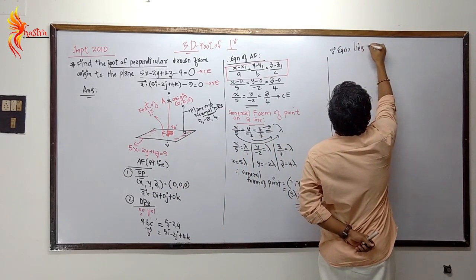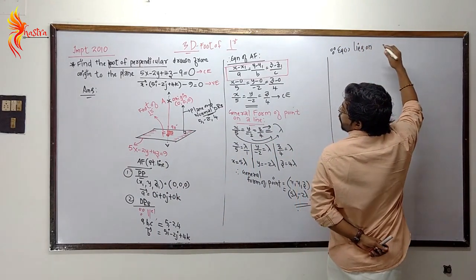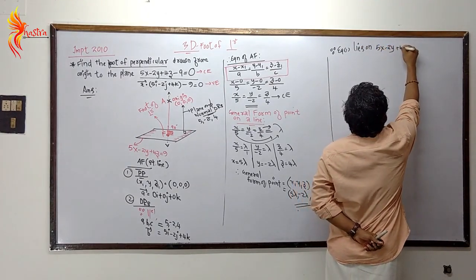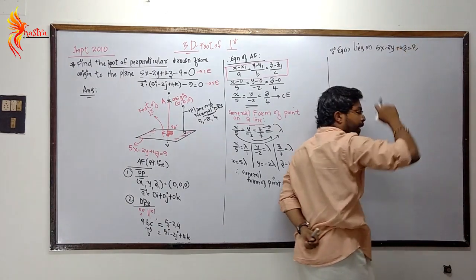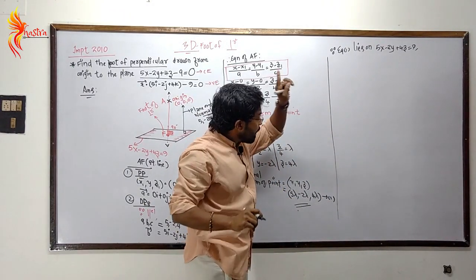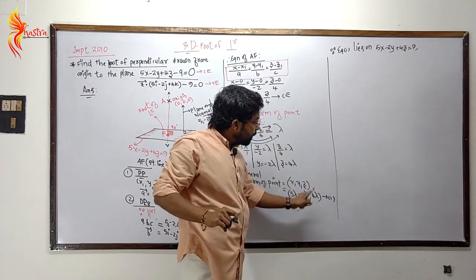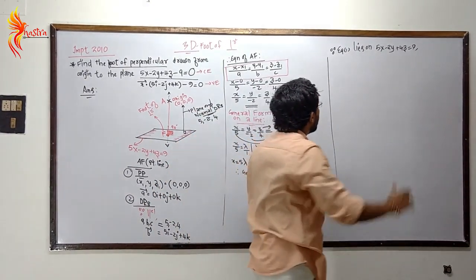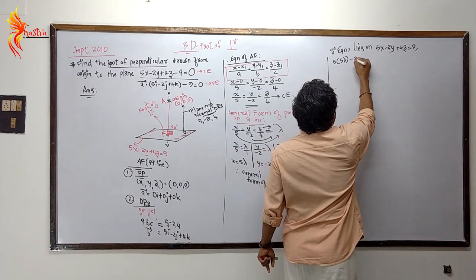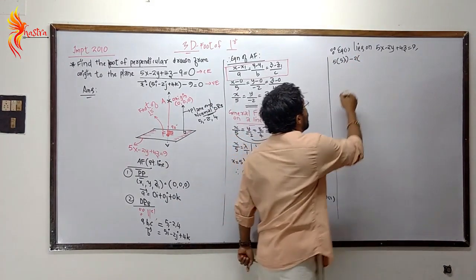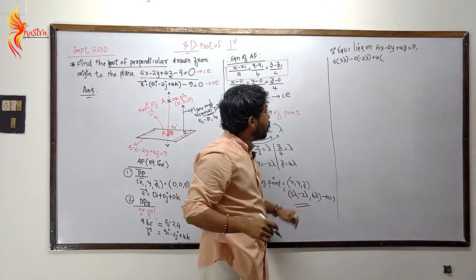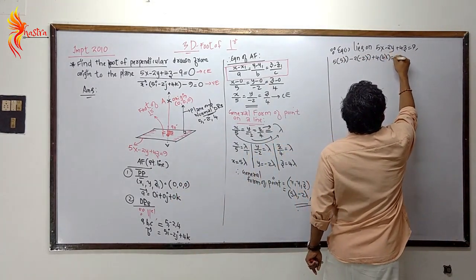Since F lies on the plane, we substitute into the equation 5x minus 2y plus 4z equals 9. So: 5 into 5 lambda, minus 2 into minus 2 lambda, plus 4 into 4 lambda equals 9.